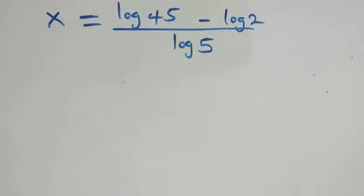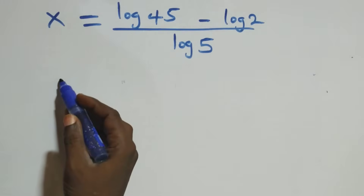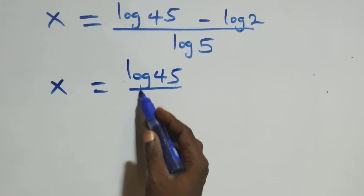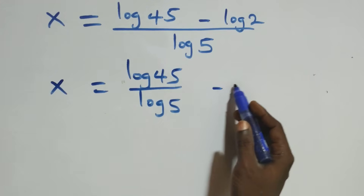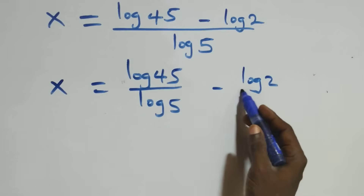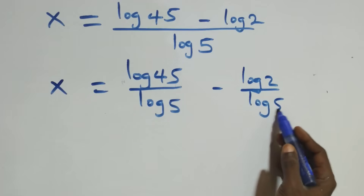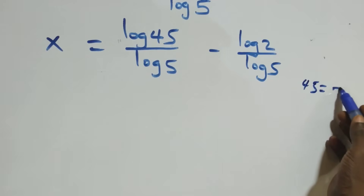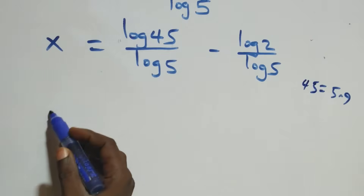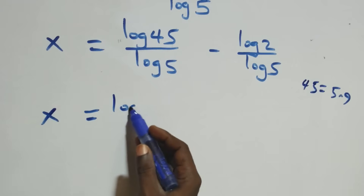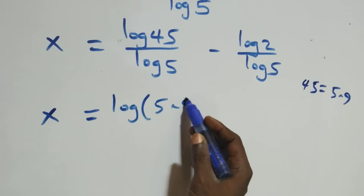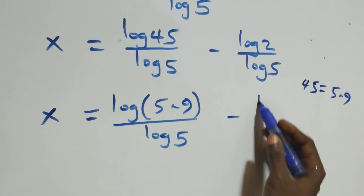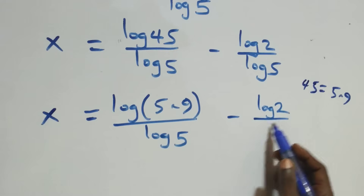The next step, we separate this into two fractions — that is, we have x equals to log 45 over log 5 minus log 2 over log 5. Then we can write 45 as 5 times 9, so we have x equals to log(5 times 9) over log 5 minus log 2 over log 5.